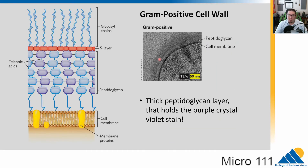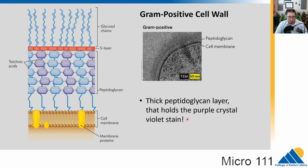Gram-positives, on the other hand, only have one cell membrane, but they have a really thick layer of peptidoglycan. This is where the difference in the gram stain comes in: this thick layer of peptidoglycan will hold the crystal violet stain in, and gram-positive cells will stay purple. Whereas gram-negatives end up pink because they couldn't retain the purple stain. So gram-positives have a lot of peptidoglycan, and that holds the crystal violet stain.